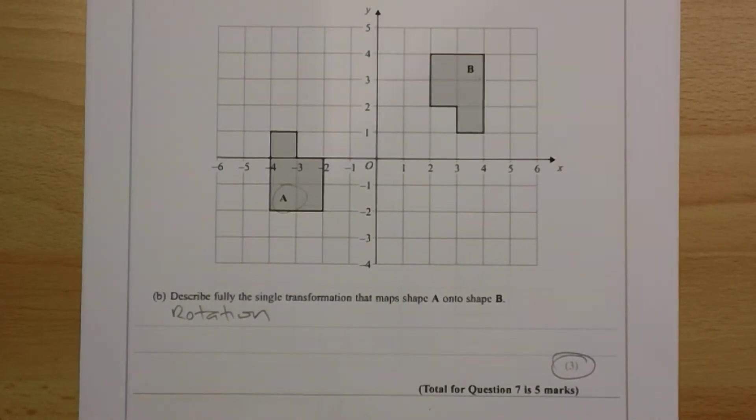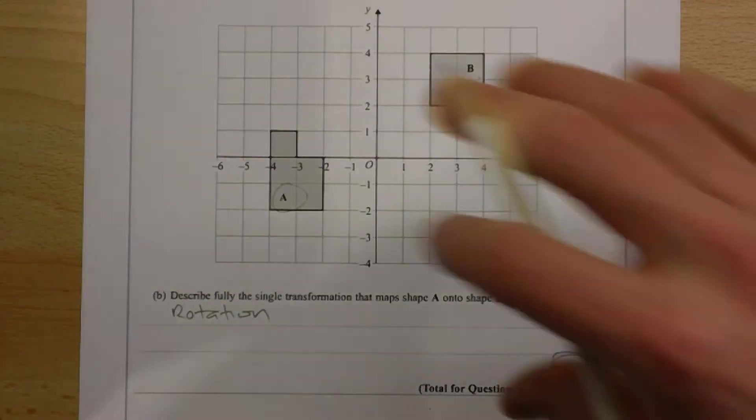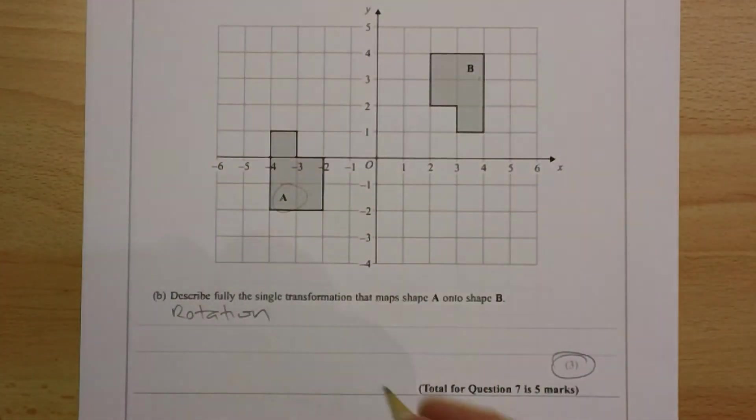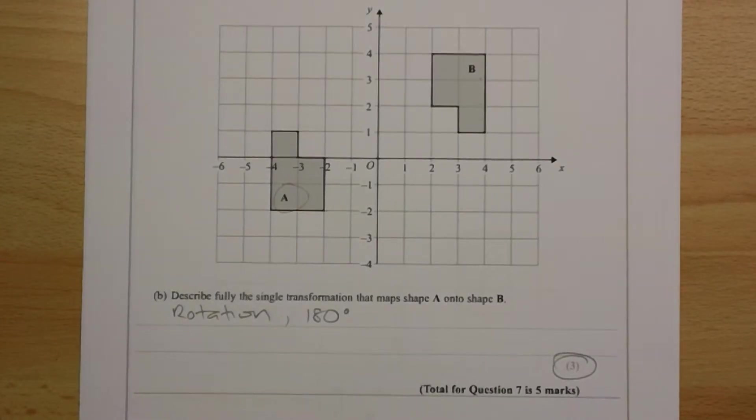For a rotation, you have to say how much the shape has been rotated by, and you have to say what center of rotation has been used. The shape is completely upside down, so therefore, it's a 180 degree rotation. You've turned the shape halfway around.